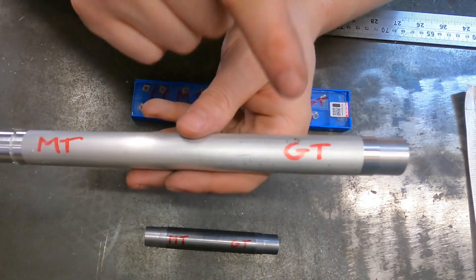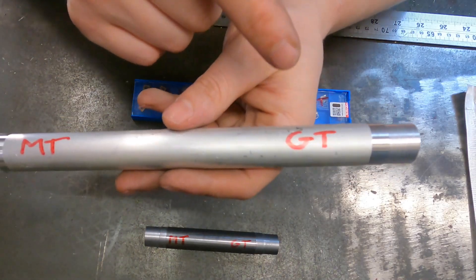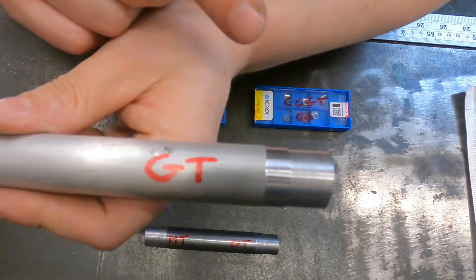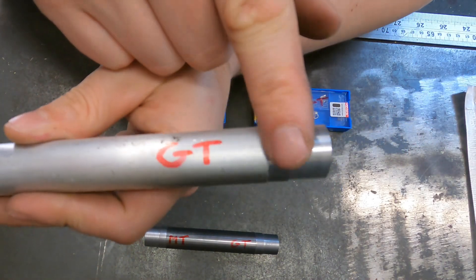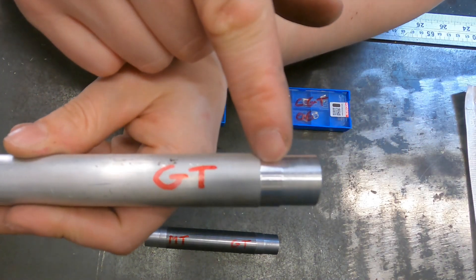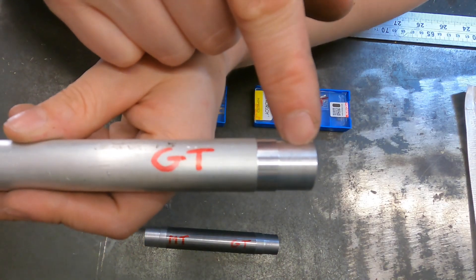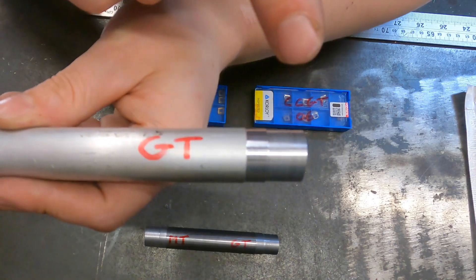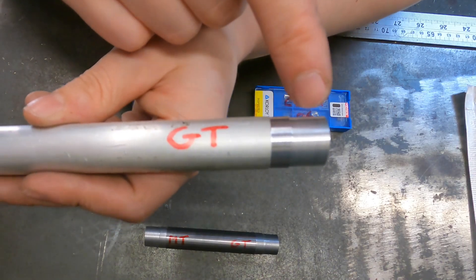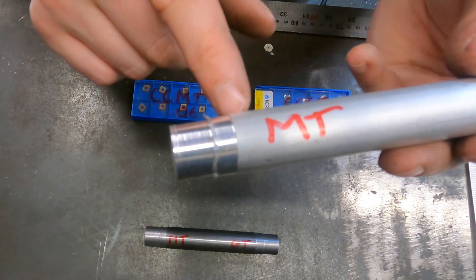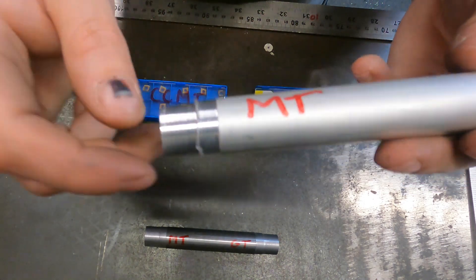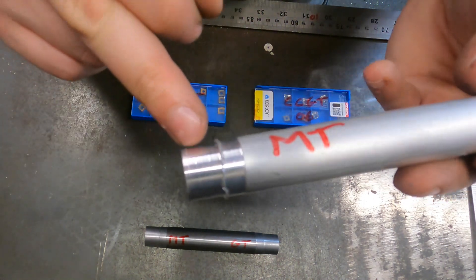Moving on to the aluminum and this is where the GT came into its own. Obviously the GT is actually specifically designed for aluminum but the finish on that is outstanding. You've got 0.25 millimeter depth of cut there and 0.5 millimeter depth of cut there and they are an absolute gorgeous finish.